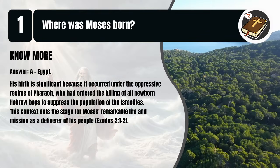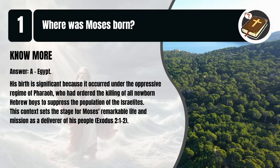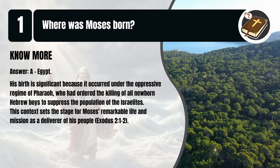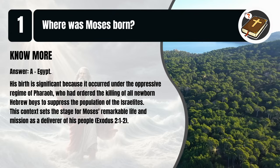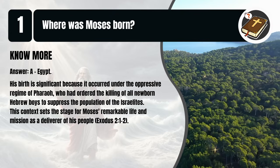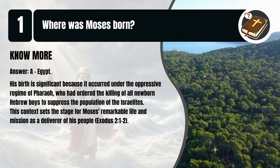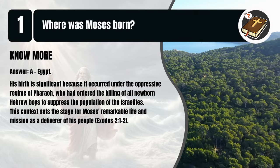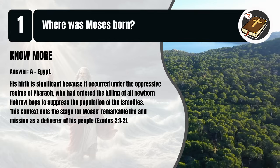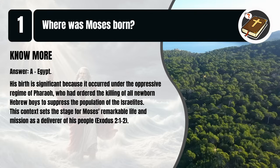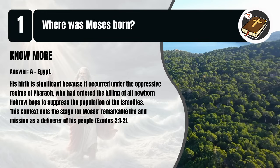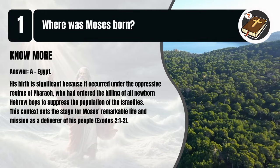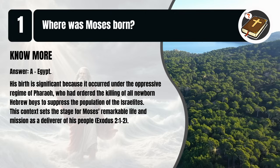That's A. Egypt. His birth is significant because it occurred under the oppressive regime of Pharaoh, who had ordered the killing of all newborn Hebrew boys to suppress the population of the Israelites. This context sets the stage for Moses' remarkable life and mission as a deliverer of his people. Exodus 2:1-2.